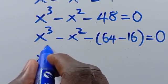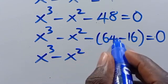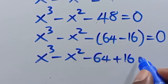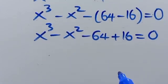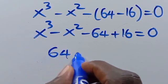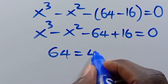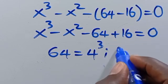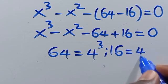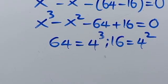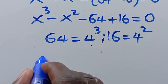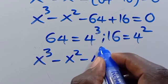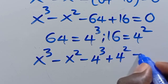From here we have x to the power of 3 minus x squared. When you open it with minus, here will be minus 64 plus 16 equals 0. We recall that 64 is 4 to the power of 3, and 16 is 4 to the power of 2. So we have x to the power of 3 minus x squared minus 4 to the power of 3 plus 4 to the power of 2 equals 0.